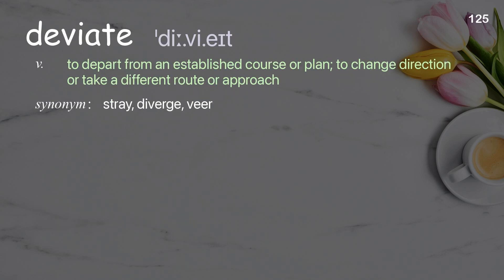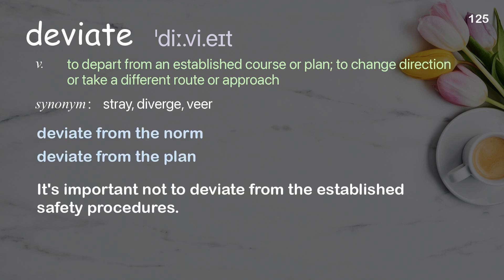Deviate: To depart from an established course or plan; to change direction or take a different route or approach. Examples: deviate from the norm, deviate from the plan. It's important not to deviate from the established safety procedures.